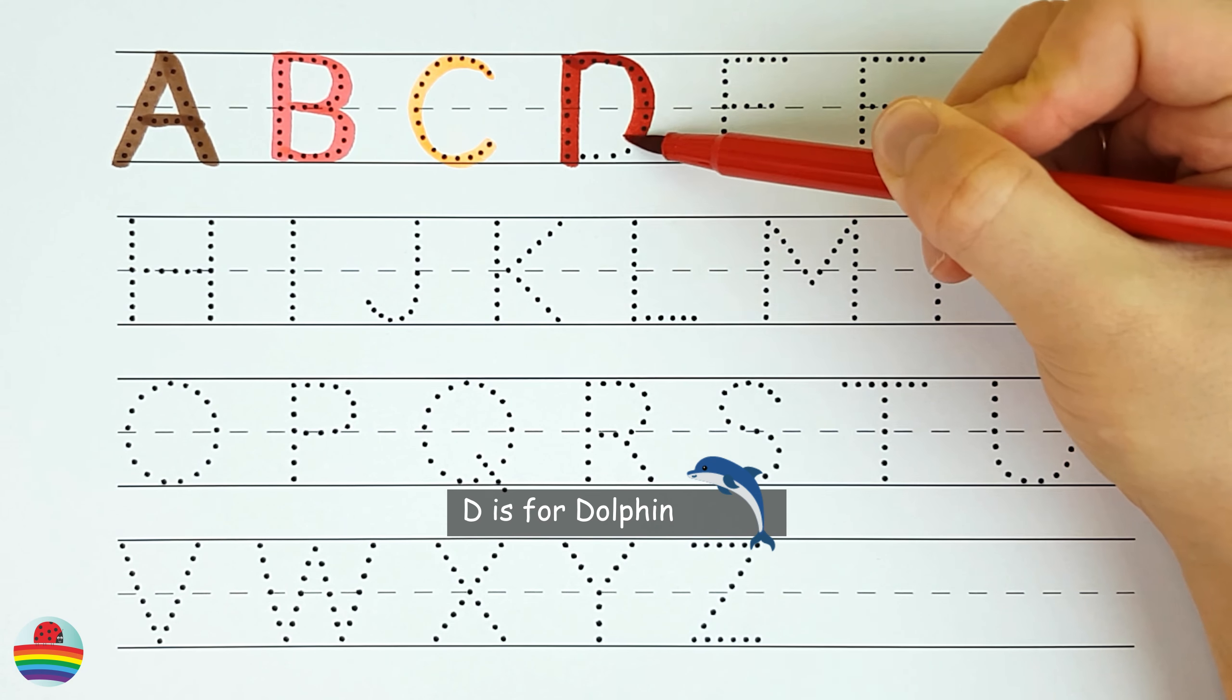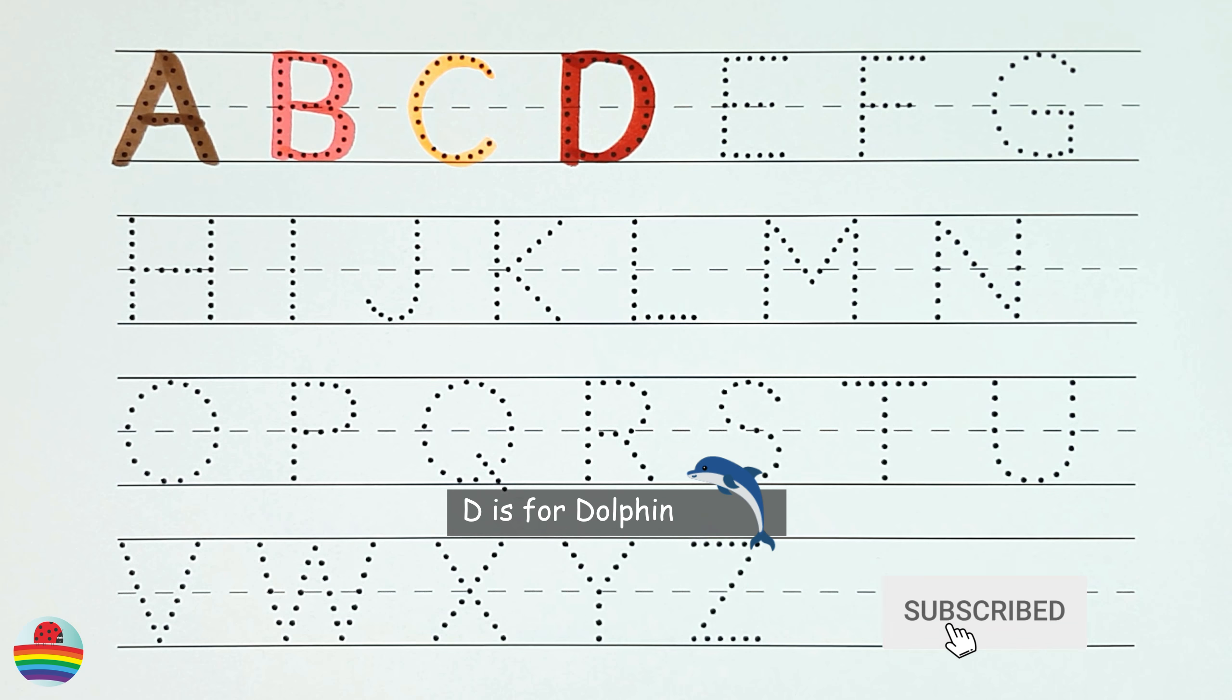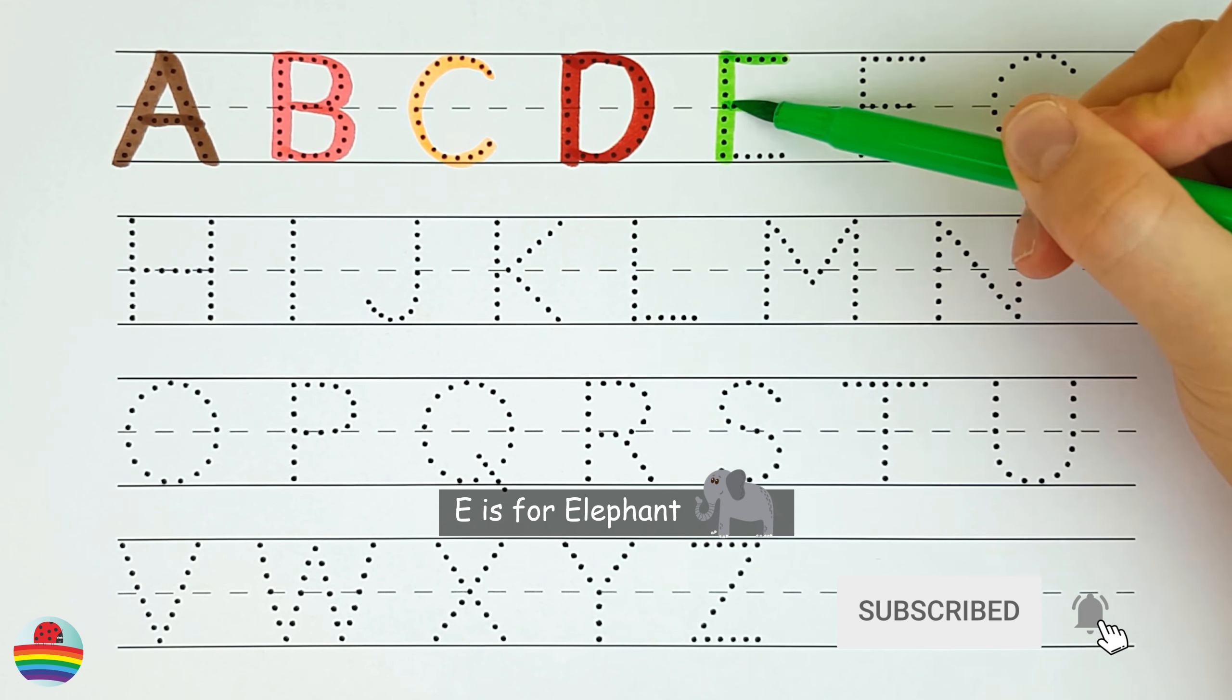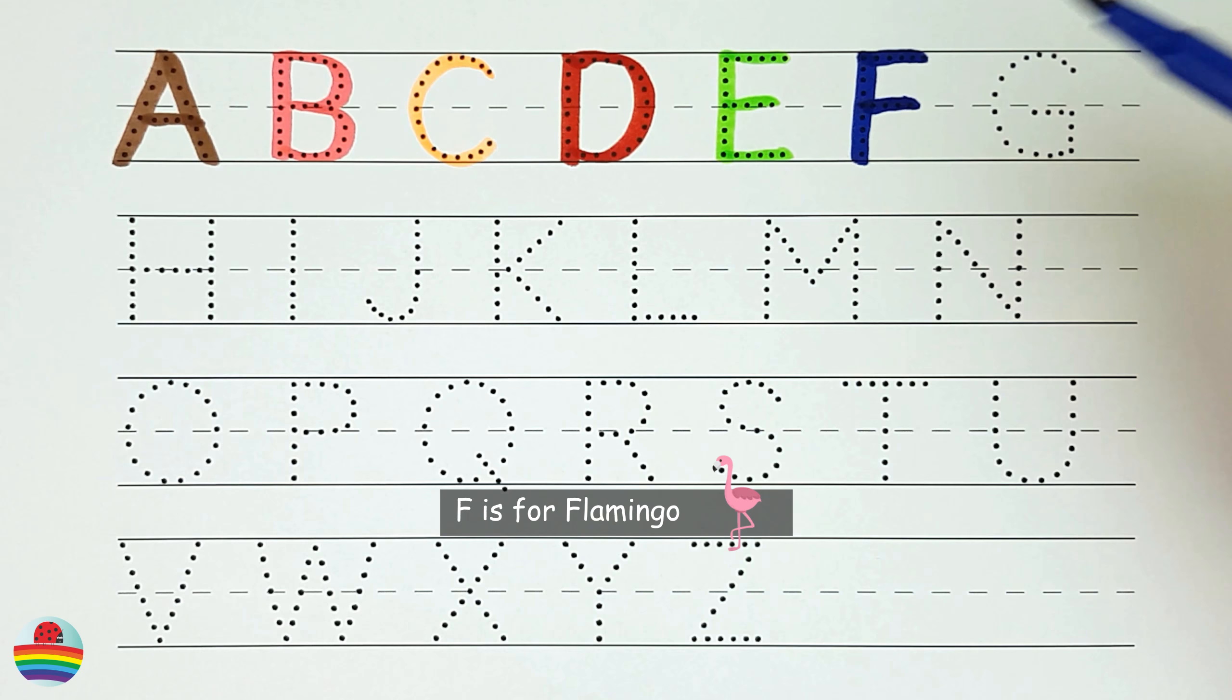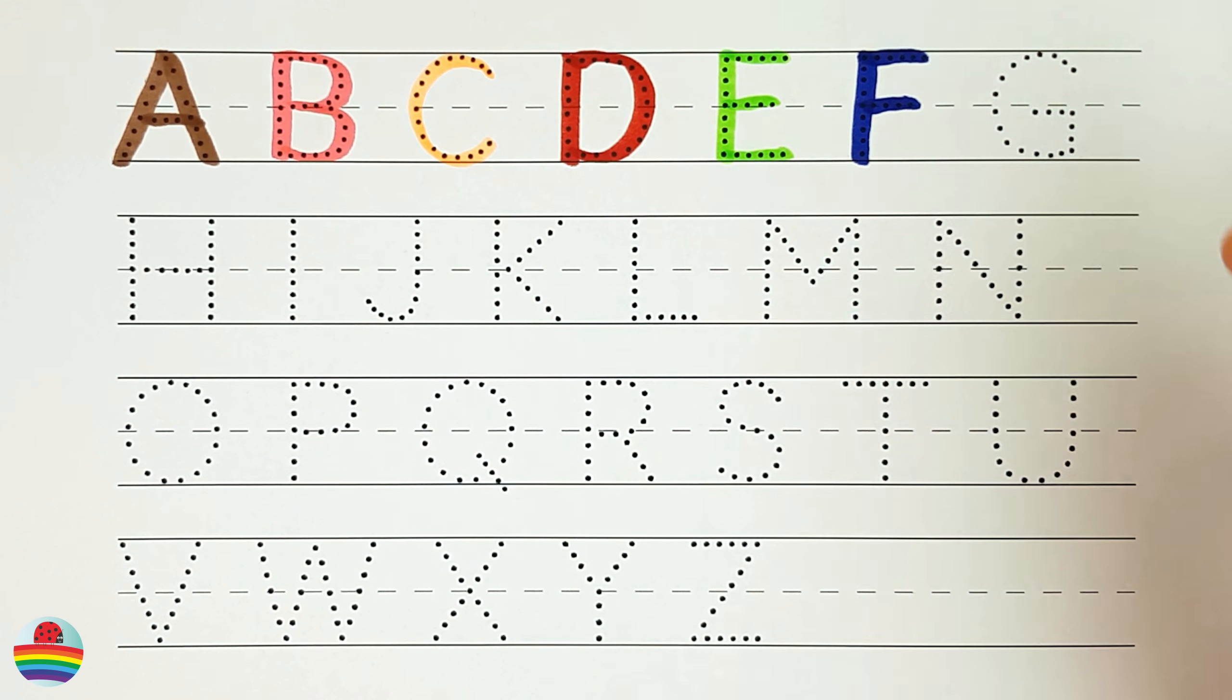D. D is for dolphin. D. E. E is for elephant. E. F. F is for flamingo. F.